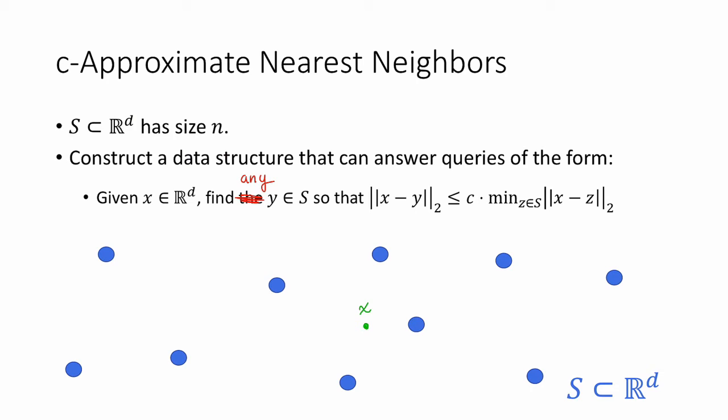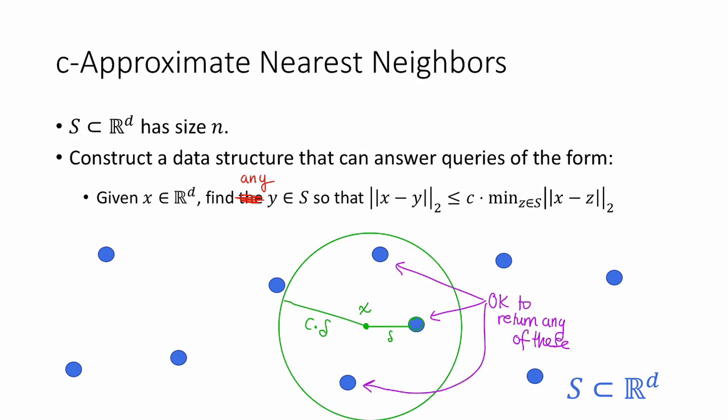For example, if this point x is closest to this point here, and the distance is delta, then we can draw a ball of radius C times delta around x, and in the C approximate nearest neighbors problem, it's okay to return any of the points in this ball. This is a relaxation of the exact nearest neighbors problem, but this turns out to still be good enough for a lot of different applications, and also we can get much better algorithms and data structures.